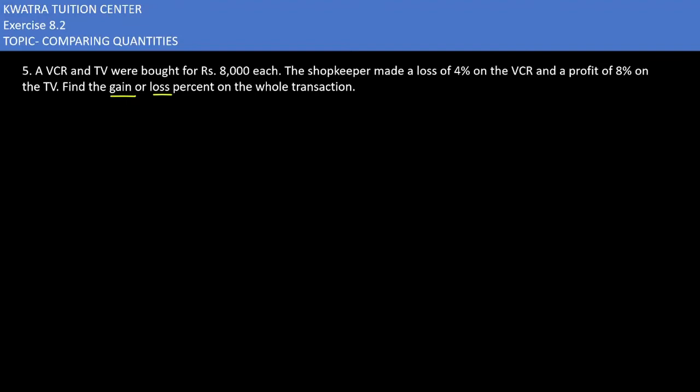So first we have the cost price of VCR. It is 8,000. Let's say the cost price of VCR is 8,000 and what is the loss percent in case of VCR? It is 4%, so we have to use which formula here?